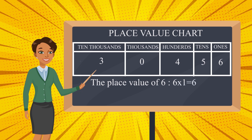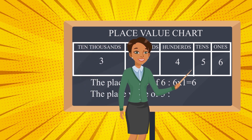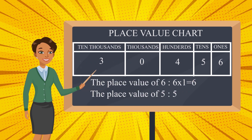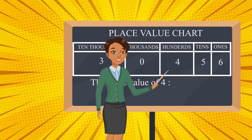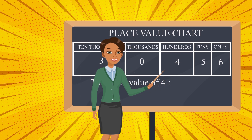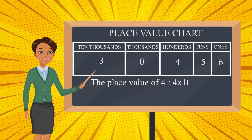The place value of five — five is in the tens place, so five tens is fifty. The place value of four — four is in the hundreds place. How many hundreds? Four hundreds — four times one hundred is four hundred.